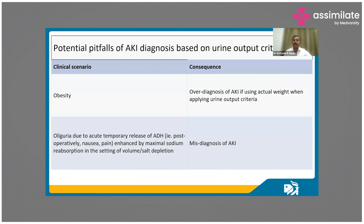In obesity, if you have taken the actual weight and not the ideal weight, you would expect more urine volume. Many guidelines suggest using ideal weight and not actual body weight so that we do not over-diagnose AKI. Also, oliguria due to acute temporary release of ADH hormone, which can occur in the post-operative period with nausea and pain, should also be taken care of before we label a patient with AKI using urine output criteria.